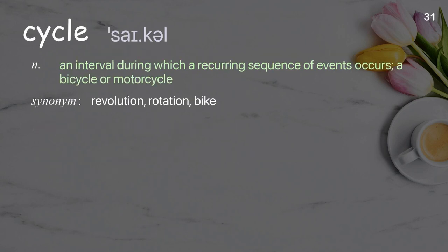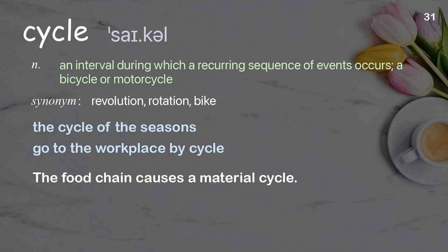Cycle: An interval during which a recurring sequence of events occurs; a bicycle or motorcycle. Examples: The cycle of the seasons, go to the workplace by cycle. The food chain causes a material cycle.